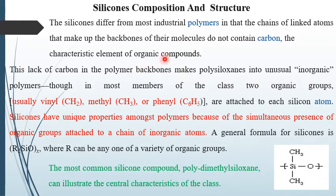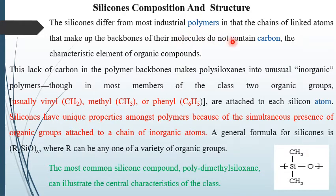The characteristic element of organic compounds is that the backbone's main atom is carbon. But silicone is an industrial polymer whose backbone does not contain carbon. The lack of carbon in the polymer backbones makes polysiloxane an unusual inorganic polymer — the absence of carbon makes these types of polymers inorganic polymers.